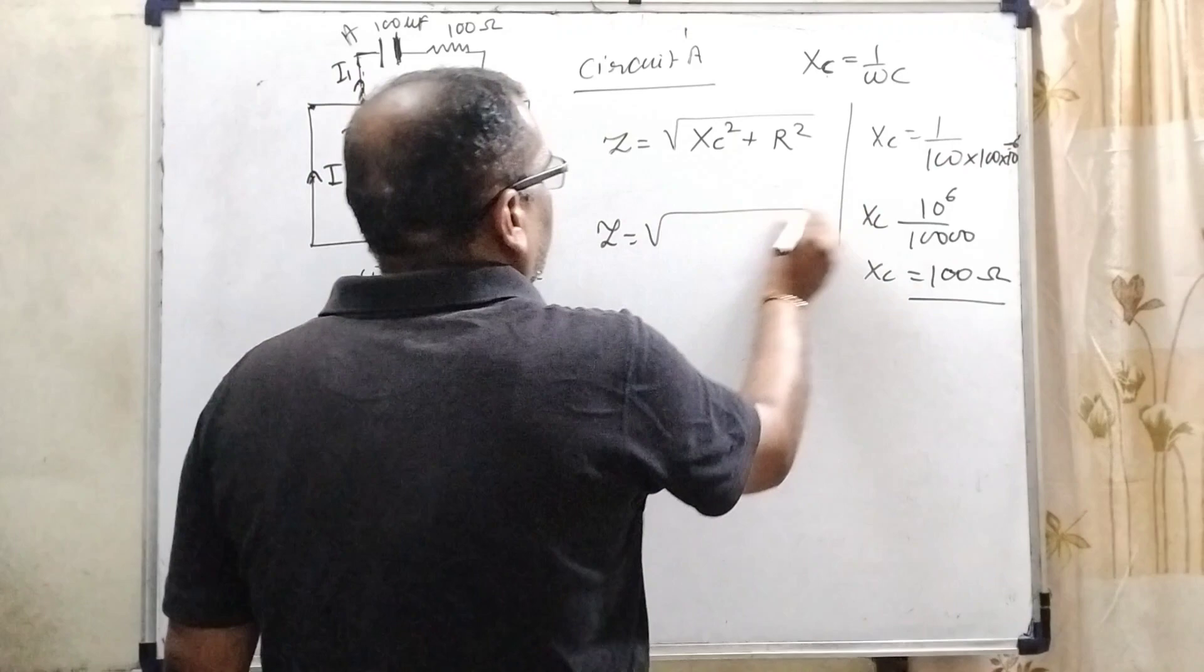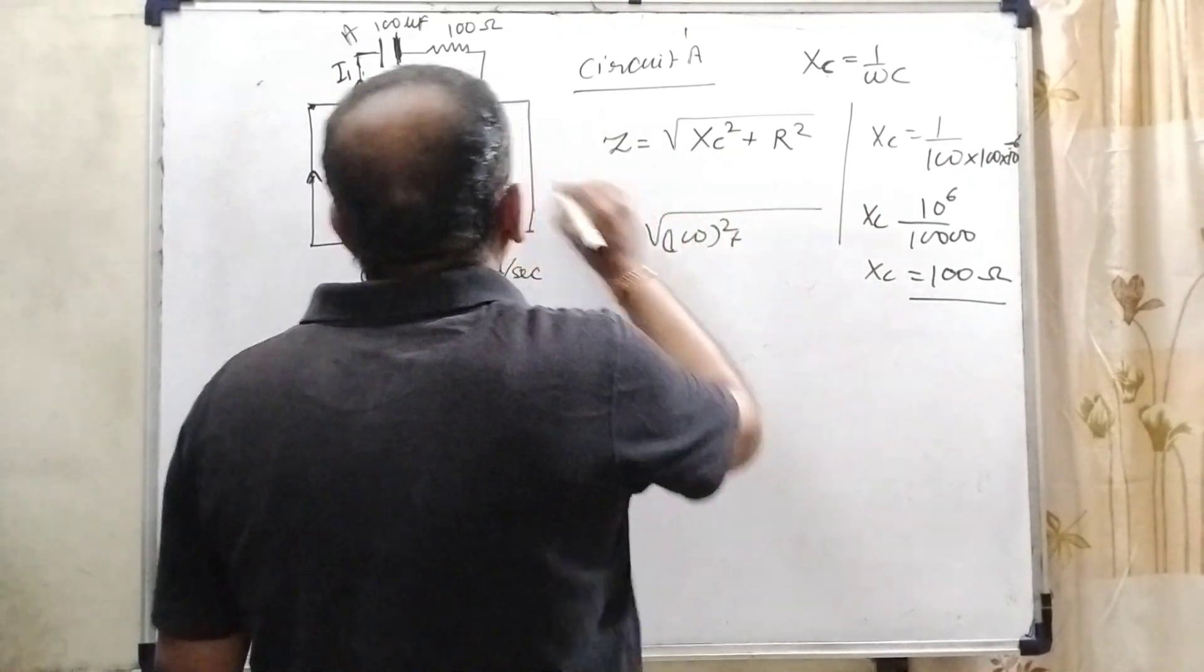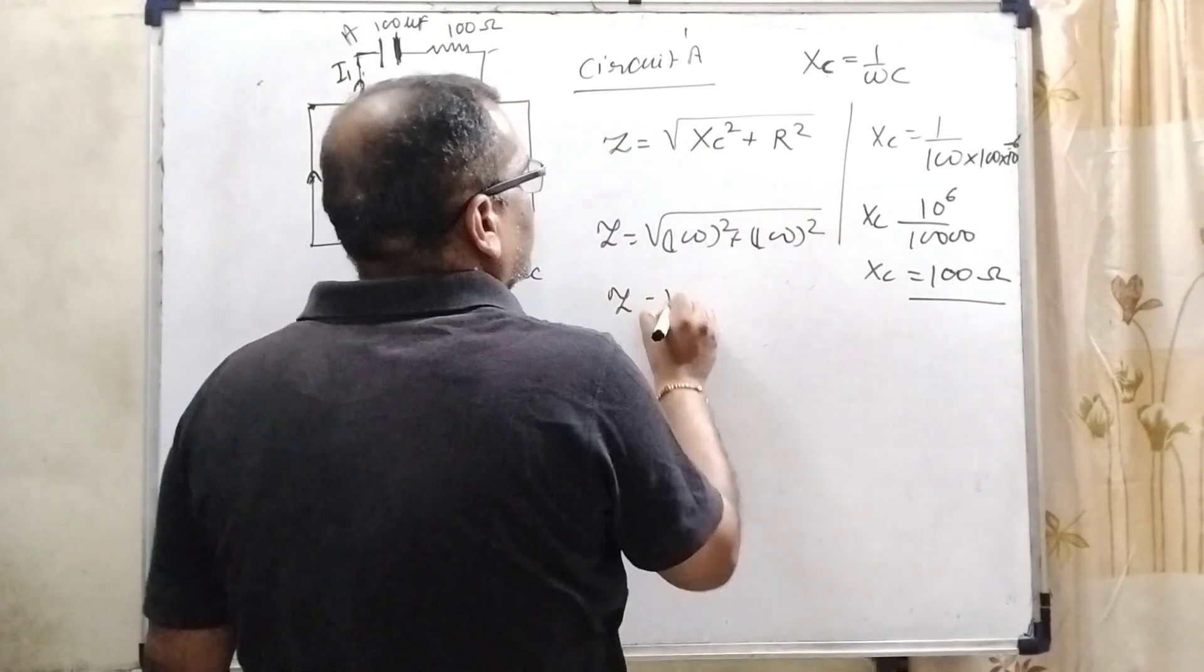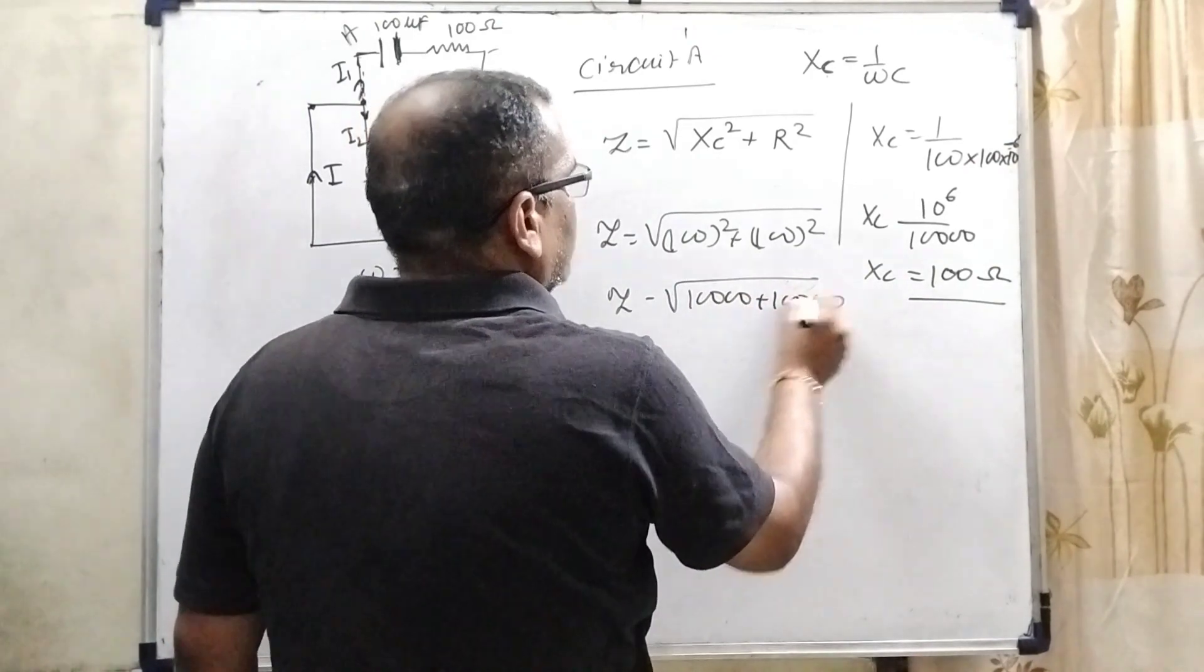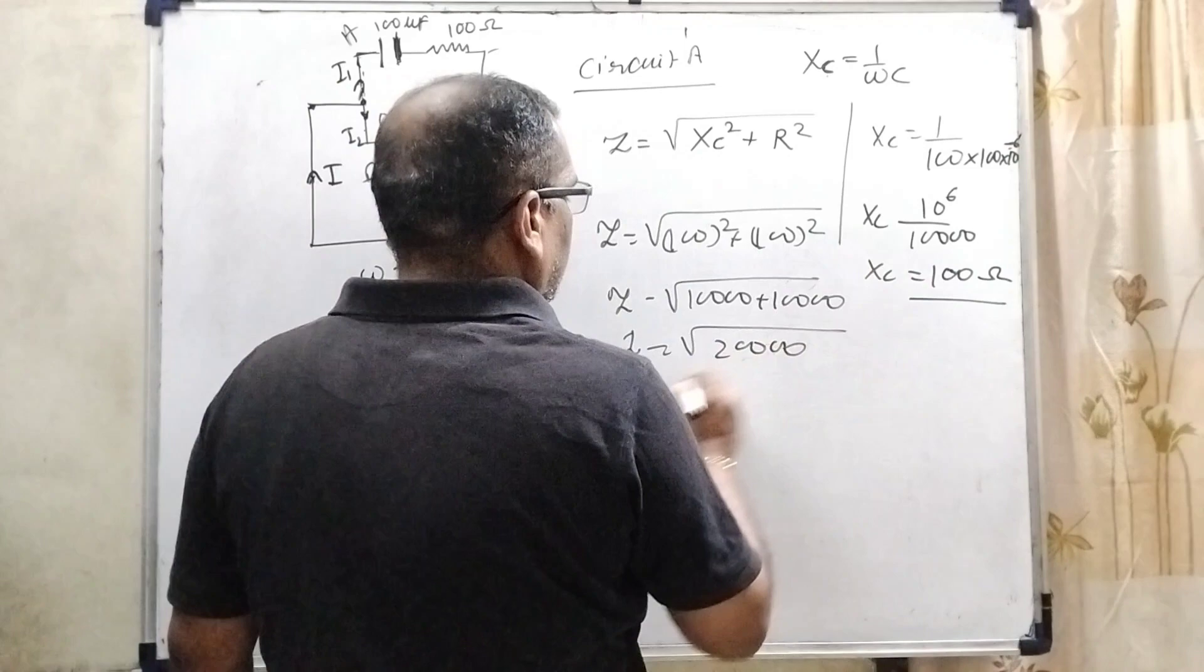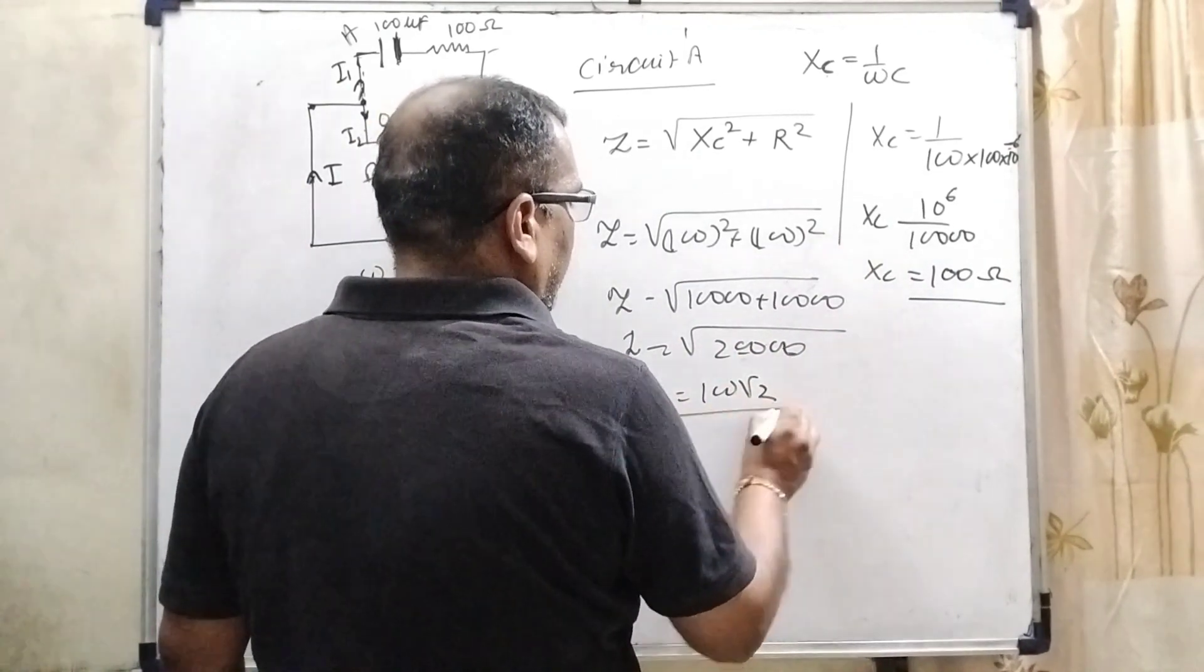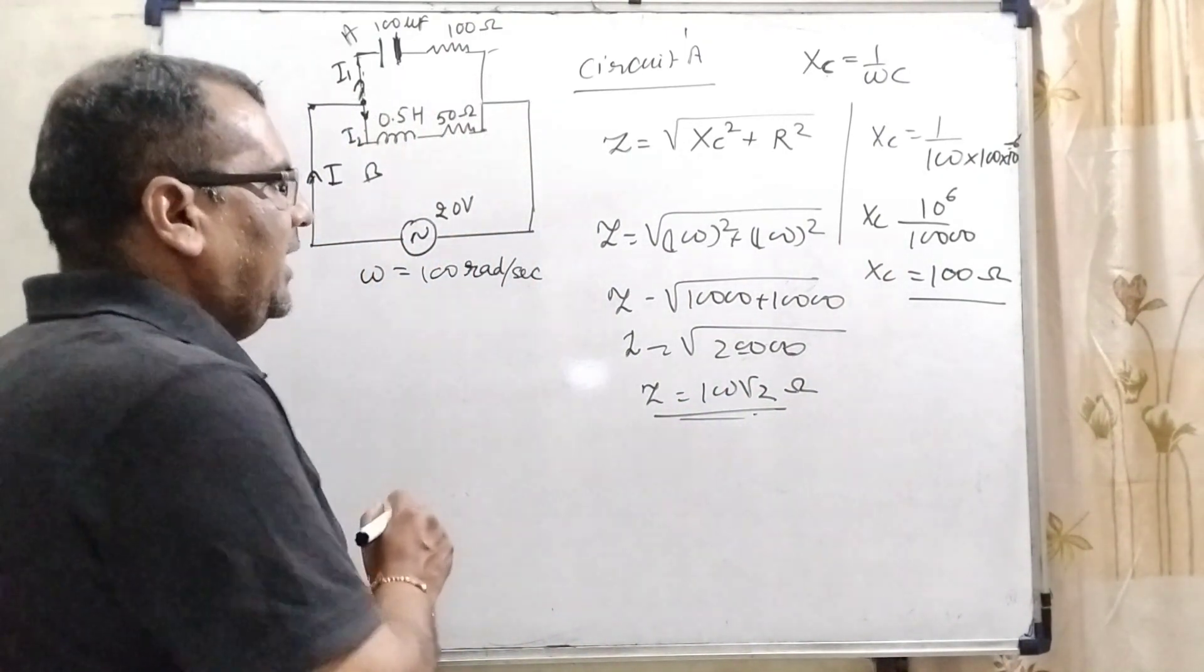Here I1 is containing resistor and capacitor in series. And second part, second circuit that is containing inductor and resistors. Then XC become 10 raised to power 6 divided by 100 times 100, that is 10000. Then XC becomes 100 ohm. So now substitute this value: 100 square and R, what is R? That is also 100 ohm. So Z equal to 200. Here 100 root 2. That is impedance.